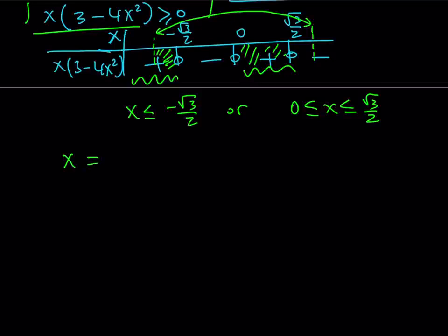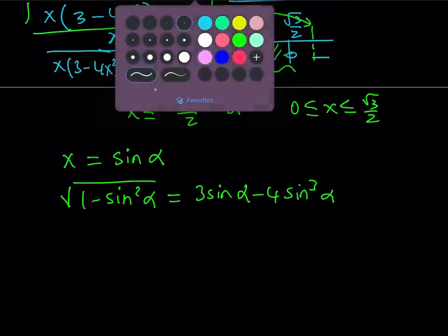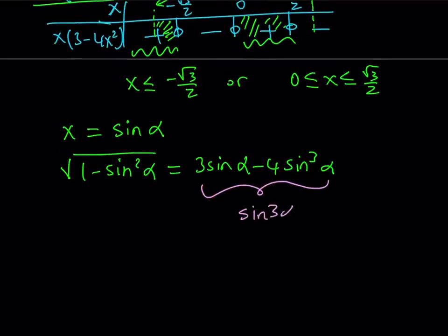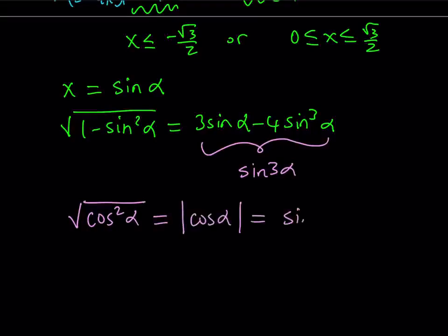Having said that, let's do our substitution. With x = sin α, substituting gives √(1 − sin²α) = 3 sin α − 4 sin³α. The right-hand side is the triple angle formula for sine: 3 sin α − 4 sin³α = sin 3α. On the left-hand side, by the Pythagorean identity 1 − sin²α = cos²α, so the left side becomes |cos α|. Therefore we have |cos α| = sin 3α.